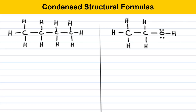I have two structures here that I'm going to use to illustrate condensed structural formulas. On the left is butane, and in this structure, I've drawn in all of the bonds as is typical for a Lewis structure. In condensed structural formulas, atoms that are bonded are grouped together. For example, on the left side of the molecule, there's a carbon that's bonded to three hydrogens. This group becomes CH3, where we draw out the C and the H, and then we put a subscript 3 behind it to indicate that there are three of them. This is a bonded group.